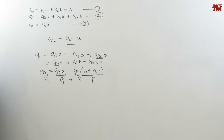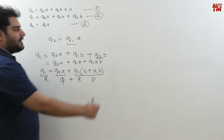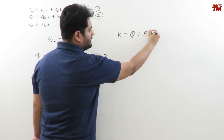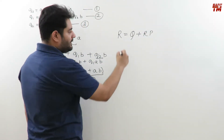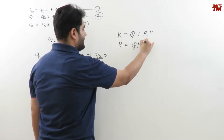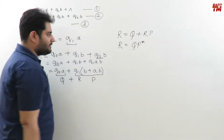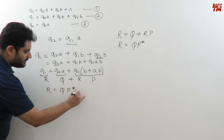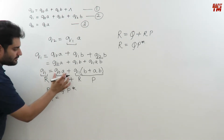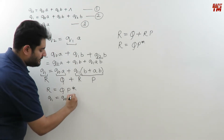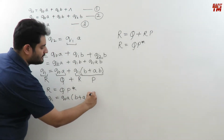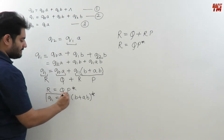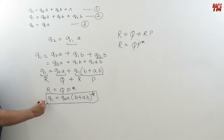This is the form of Arden's theorem: if r, Q, and P are regular expressions and r = Q + r·P, then the unique solution is r = Q·P*. Applying this: q1 = q0·a · (b + a·b)*. So we have got the equation for q1 as q1 = q0·a·(b + a·b)*. Label this as equation 4.